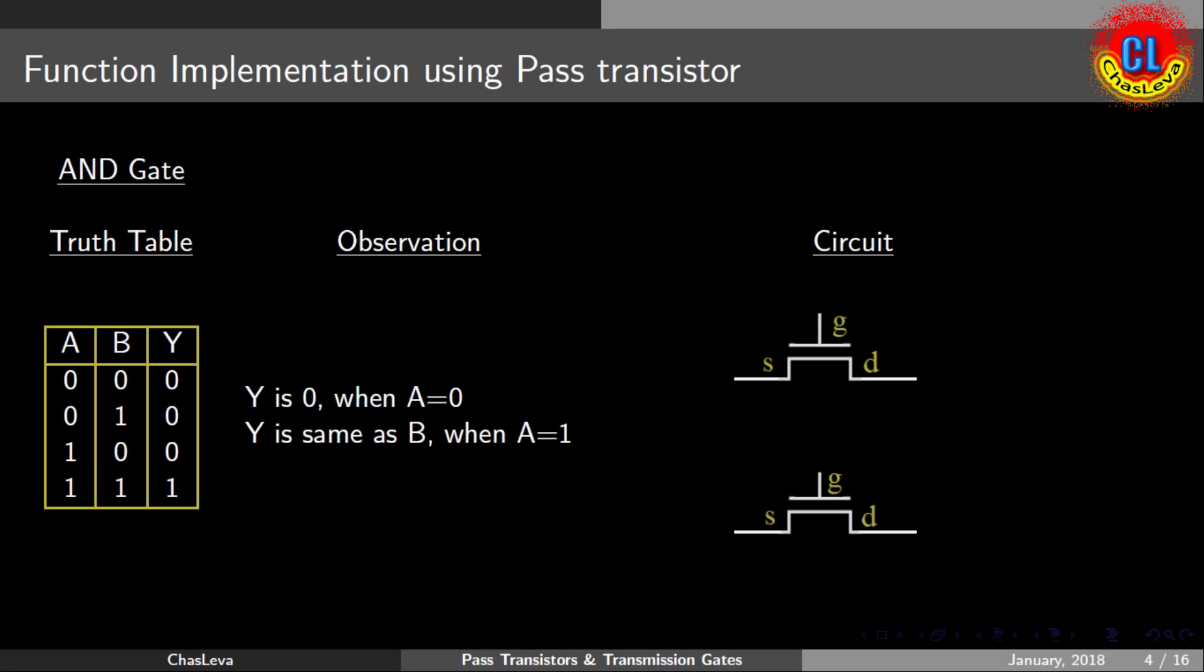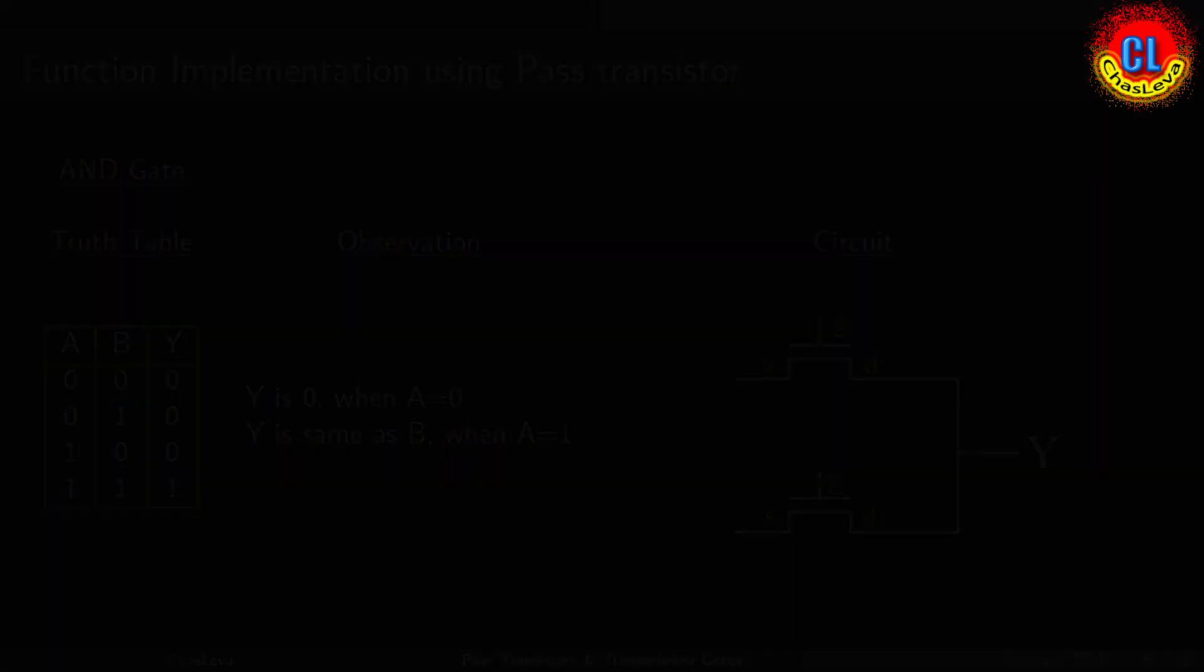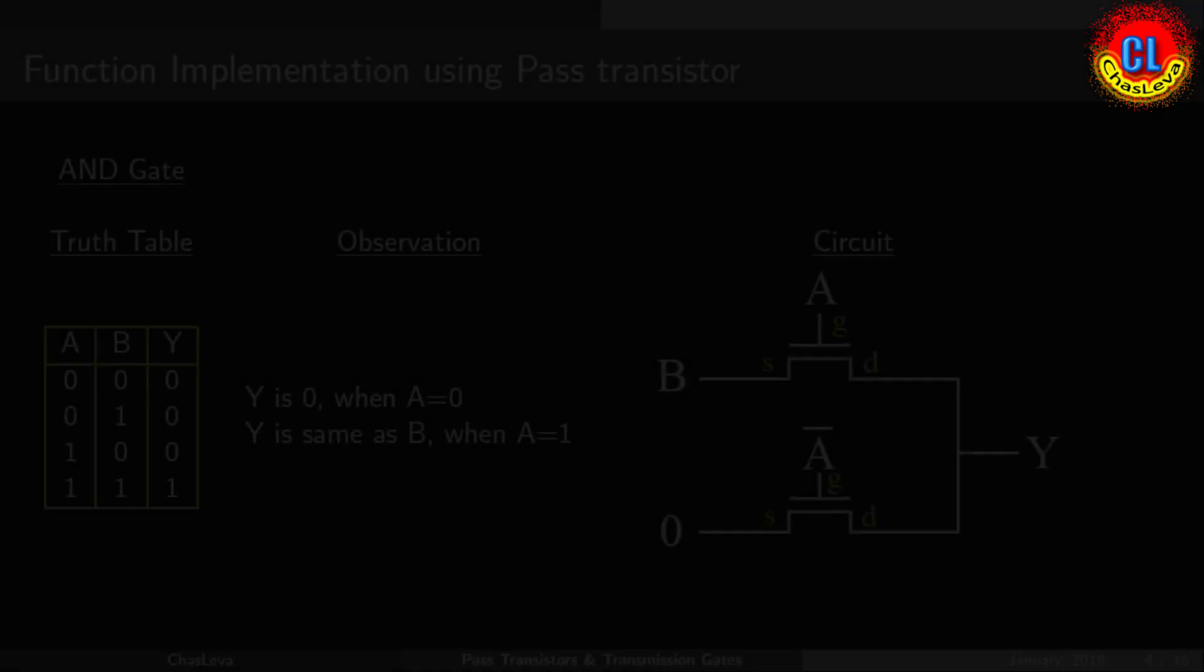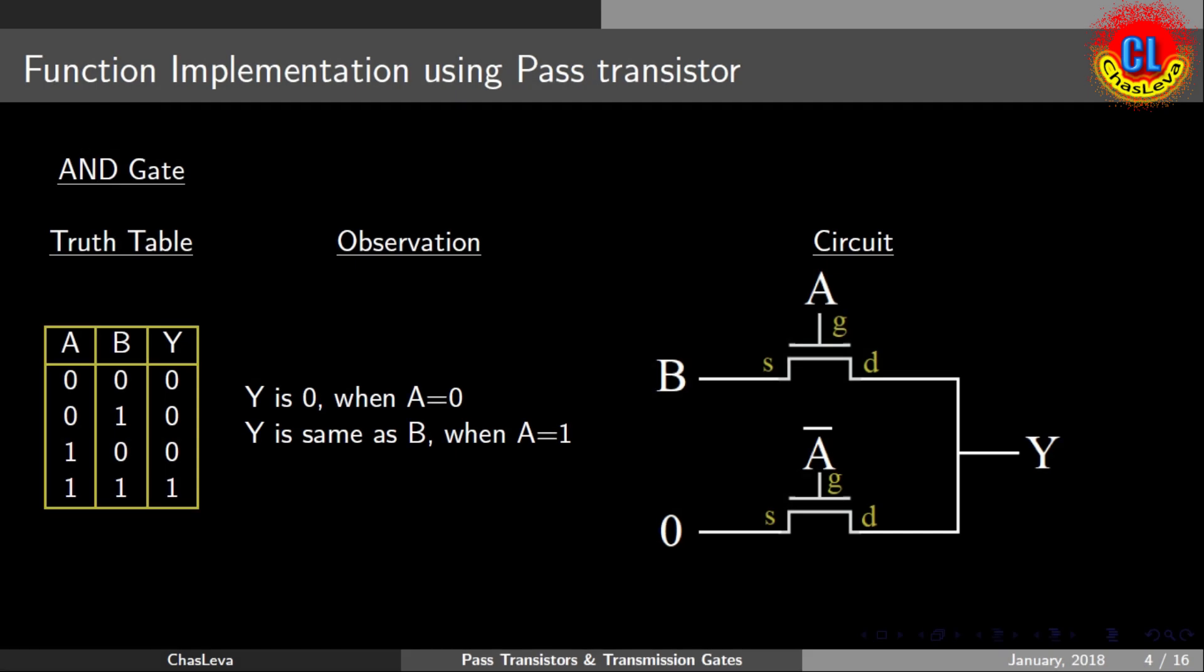We will make circuit using NMOS. We draw two transistors. Drain of both transistors will make short and connect to output terminal Y. Gate of the transistor drawn at top will be controlled by input A and the source will connect to input B. Gate of the other transistor will connect to the complement of the input A, we denote as A bar, and the source will connect to zero, that is ground. Thus we can implement AND gate using pass transistor.